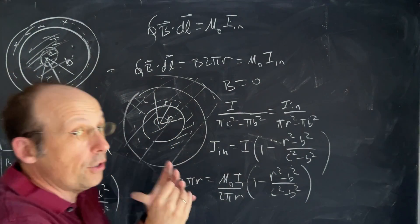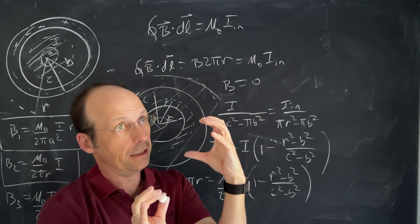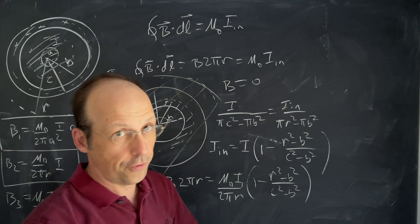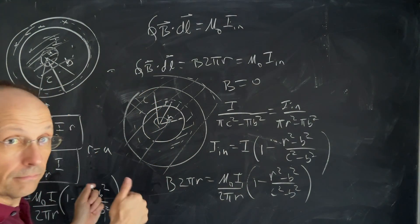And there you go. And that's why we use a coaxial cable because the coaxial cable creates no magnetic field on the outside. So it doesn't interfere with other cables. And that's a good thing. The end.